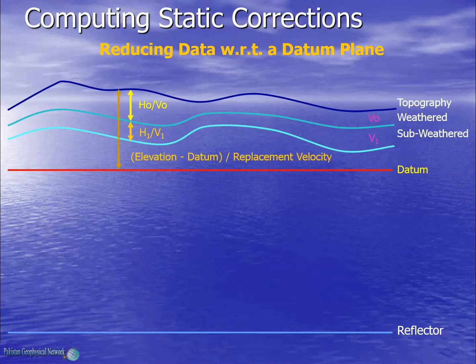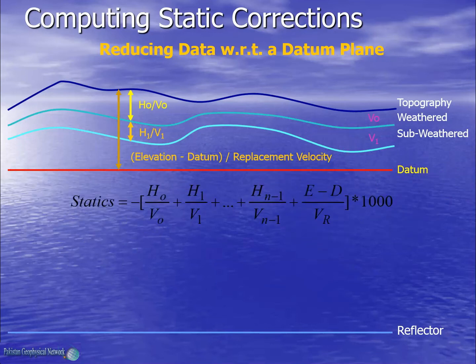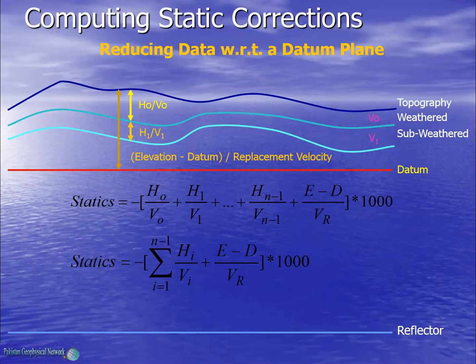We also need to handle the elevation variations. Seismic data has units of time while elevation has units of space, so we need to convert elevation variations in time by using a replacement velocity. This is an arbitrary velocity and is generally taken a little above the sub-weathered layer velocity. The static correction is given by this equation. Here we have the delay time of weathered layer, sub-weathered layer and so on, as well as elevation difference from datum divided by replacement velocity. The multiplication with 1000 is for converting seconds to milliseconds. We can also simplify the equation where the delay times have a sigma term — this is the weathered layer statics and this is the elevation static.